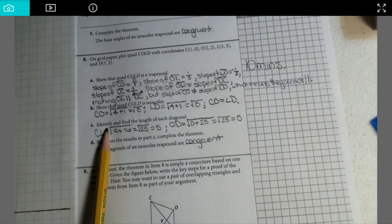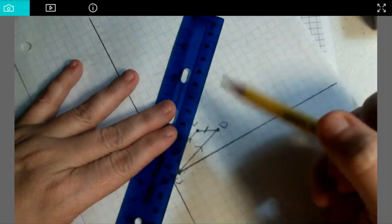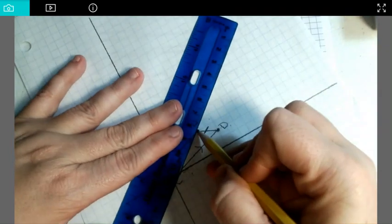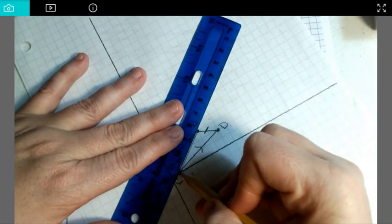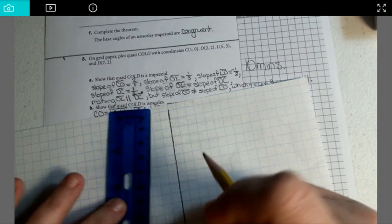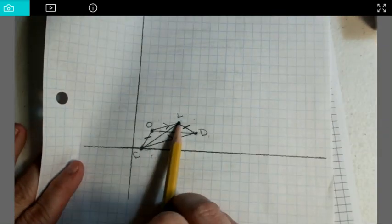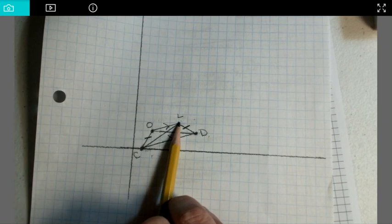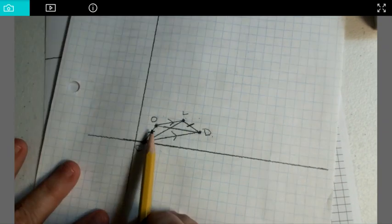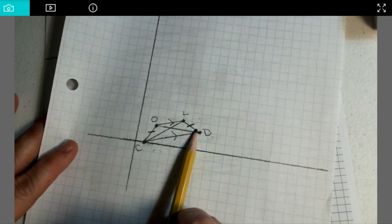It asked us to identify and find the length of each diagonal. Now, I didn't plot this, but I can. We want to find the distance from C to L and the distance from D to O. Whenever I did the distance formula from C to L, I got the square root of 25, which is 5. And whenever I did D to O, I got the square root of 25, which is 5.